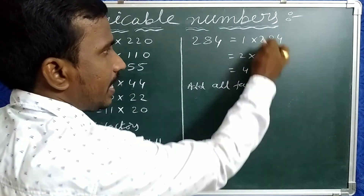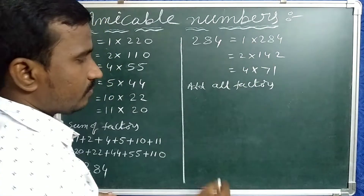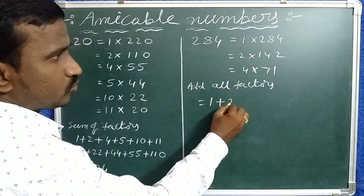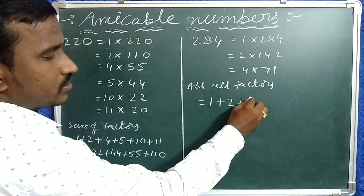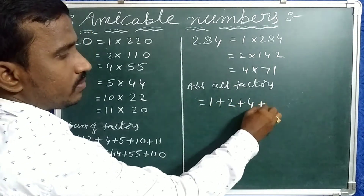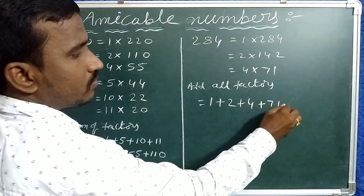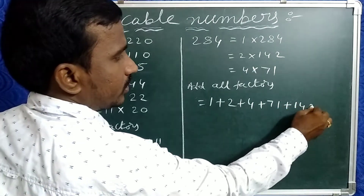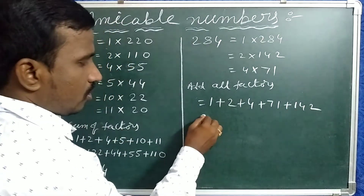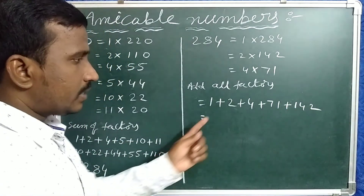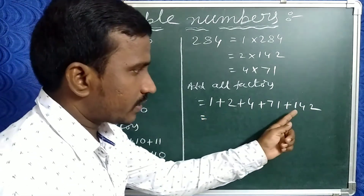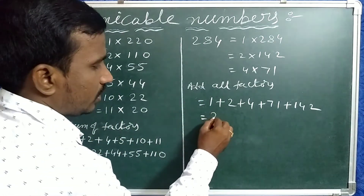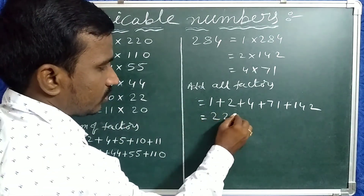Now add all factors of 284 except itself: 1 + 2 + 4 + 71 + 142. Adding these factors gives us 220.